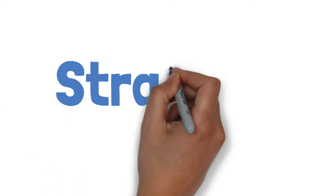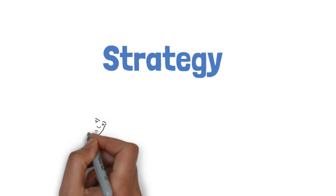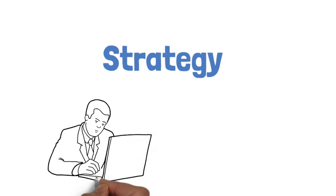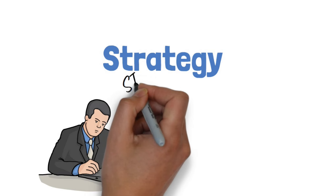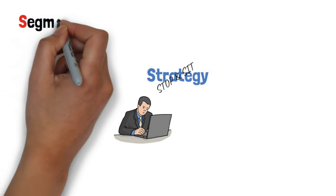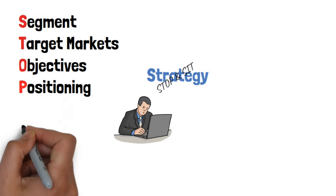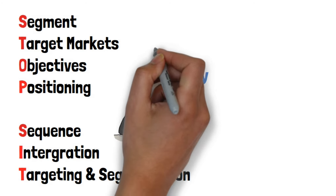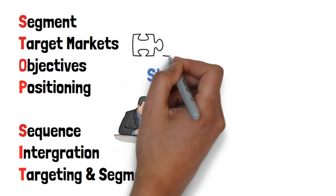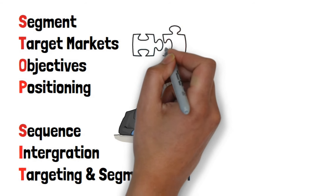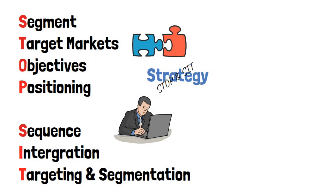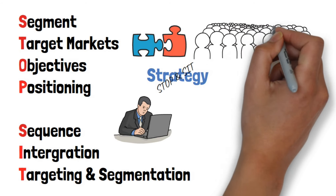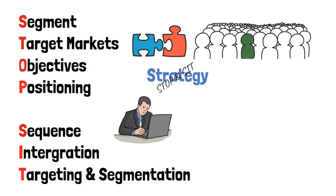Our next step is strategy, which will take the objectives that you've created and discover ways to begin to actually implement them in the best form and fashion. In Sostak, strategy involves another acronym called STOP and SIT. It stands for Segment, Target Market, Objectives, Positioning, Sequence, Integration, and Targeting and Segmentation. Segmenting means to break down each objective into smaller parts so that you're able to best address each specific action you want to achieve. Target market explores what market you would like to focus each objective towards. Note that target markets can also overlap and intertwine with each other.